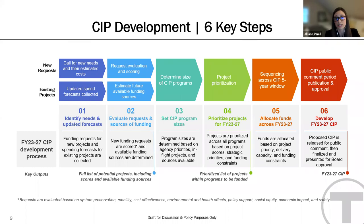These requests include new capital projects and additional funds for existing projects. All requests are scored by small cross-functional evaluation teams using eight criteria that include system preservation, mobility, cost-effectiveness, environmental and health effects, policy support, social equity, economic impact, and safety.